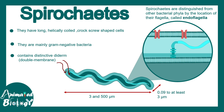Flagella is generally protruded out of the bacterial surface, but this particular endoflagella moves within the membranes. This allows the bacteria to make a corkscrew-like movement.